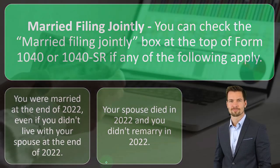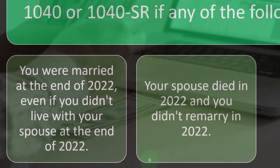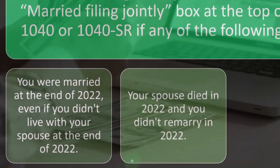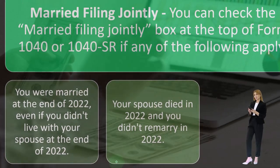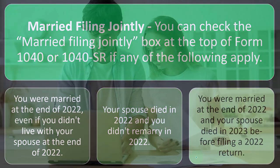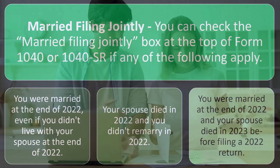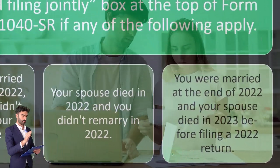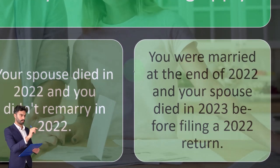The deceased spouse could still have income to report in the year of death, so married filing jointly is generally what you would do in the year of death. After that year, the question becomes whether you go to single, or to qualifying surviving spouse if there was a dependent. Also qualifying: if you were married at the end of 2022 and your spouse died in 2023 before filing the 2022 return — you were still married at that end point.